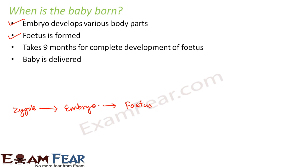For complete development of the fetus it takes nine months, though sometimes a fetus is fully developed by eight months. Once fully developed, the baby is delivered. Various body parts include hands, legs, heart, eyes, ears, and fingers. Some body parts like the heart develop first, whereas others like fingers, nails, or hair develop later.